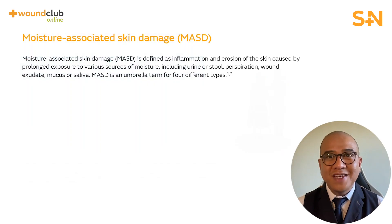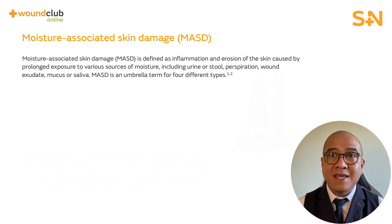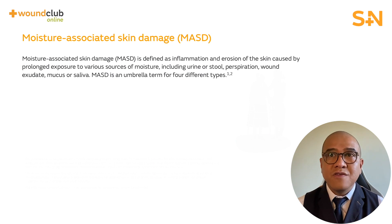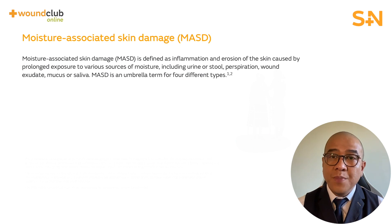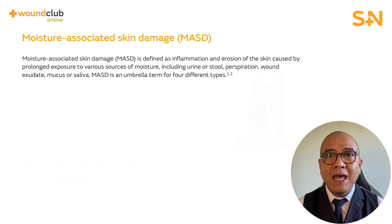Moisture-Associated Skin Damage is an umbrella term for four types of MASD. It is defined as the inflammation and erosion of the skin caused by prolonged exposure to various sources of moisture, including urine or stool, perspiration, wound exudate, mucus or saliva.